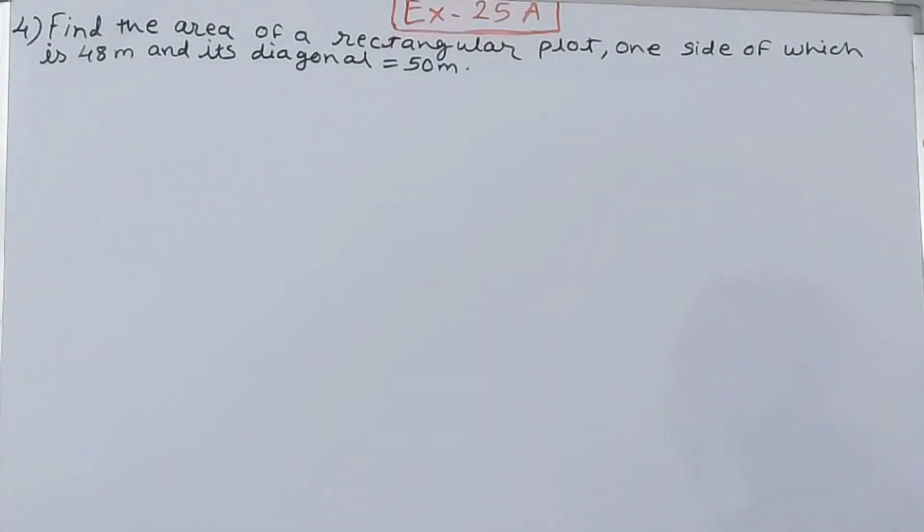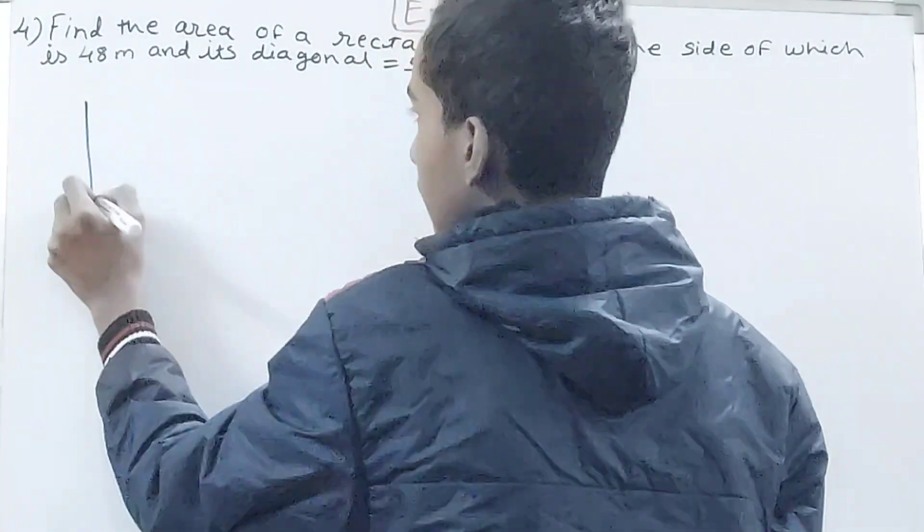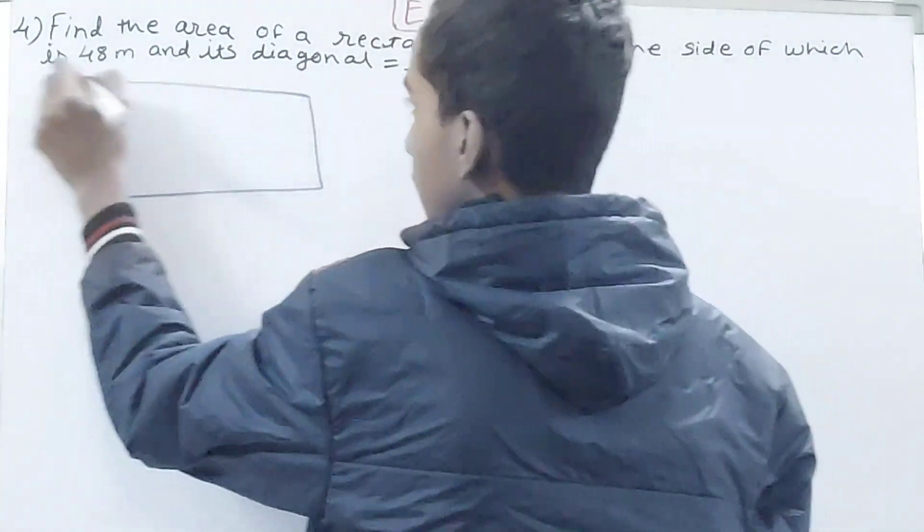And its diagonal is 50 meters. So you can see this rectangular plot is there, something like this.